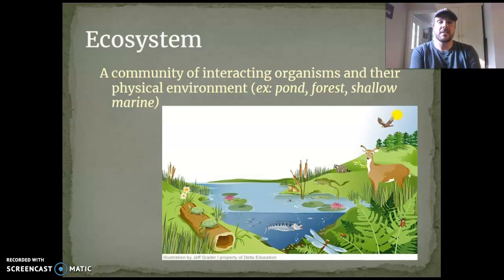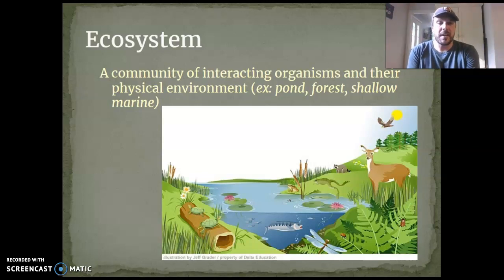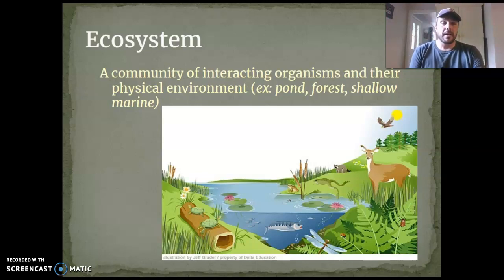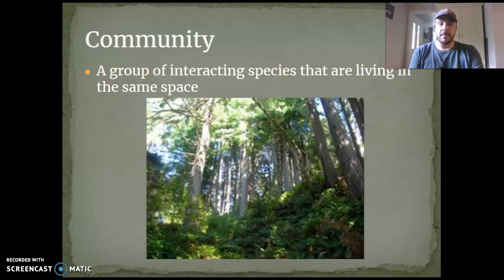So here we go — ecosystems. When we're looking at ecosystems, we are looking at a community of interacting organisms and their physical environment. In this pond we've got some fish, lily pads, frogs, turtles around the pond, deer, raccoons, aquatic plants, ferns — all these things that are interacting. That's an ecosystem. We could also have a field ecosystem, a lake ecosystem, or a temperate forest ecosystem, which is what most of Vermont has.